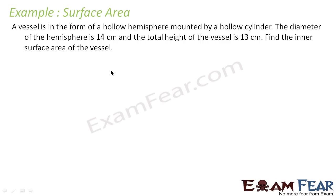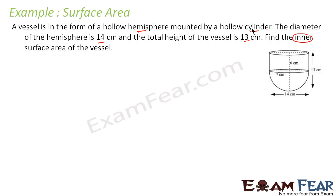We'll take one example. The question says a vessel is in the form of a hollow hemisphere mounted by a hollow cylinder. The diameter of the hemisphere is 14 cm and the total height of the vessel is 13 cm. We have to find the inner surface area of the vessel. This is my typical diagram — this is my hollow hemisphere, and mounted on top is a hollow cylinder.